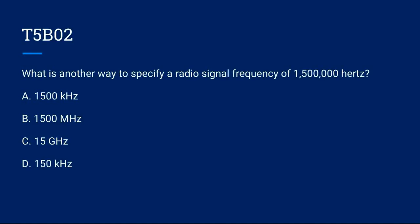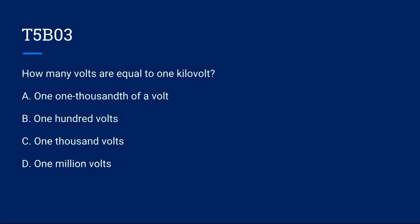T5B02. What is another way to specify a radio signal frequency of 1,500,000 hertz? A. 1,500 kilohertz. B. 1,500 megahertz. C. 15 gigahertz. Or D. 150 kilohertz. The correct answer is A. 1,500 kilohertz. T5B03, how many volts are equal to 1 kilovolt? A. 1,000th of a volt. B. 100 volts. C. 1,000 volts. Or D. 1,000,000 volts. The correct answer is C. 1,000 volts. 1,000 volts is 1 kilovolt.